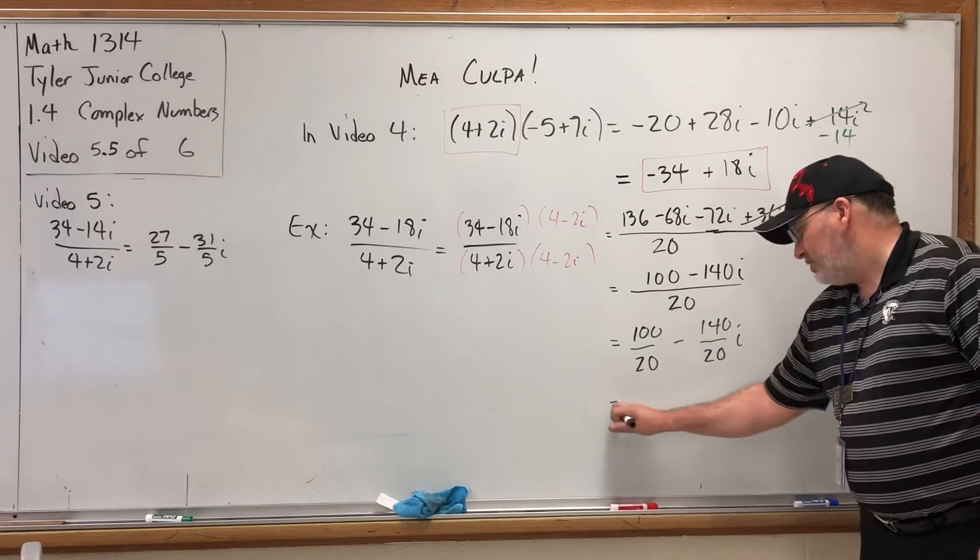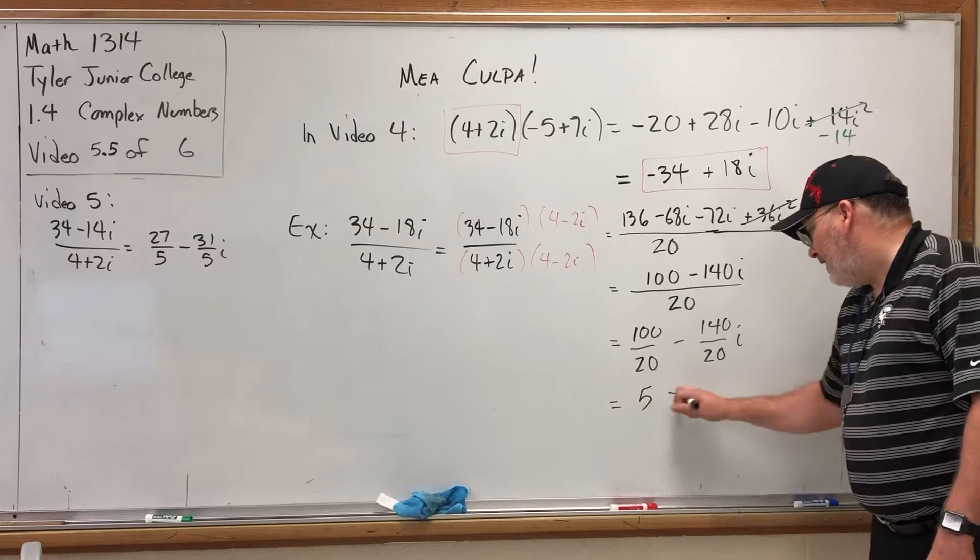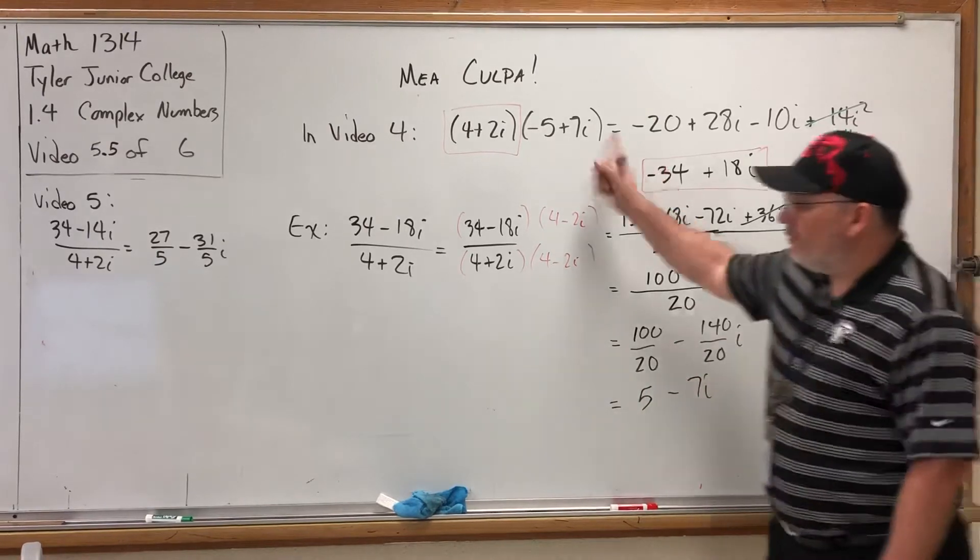We split into two fractions: 100/20 - 140i/20. Both reduce to 5 and -7i, which is what I predicted.